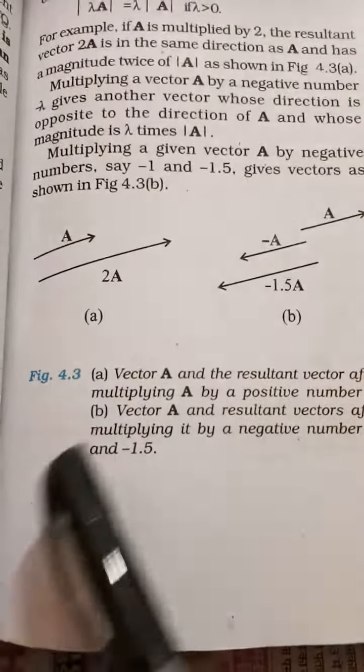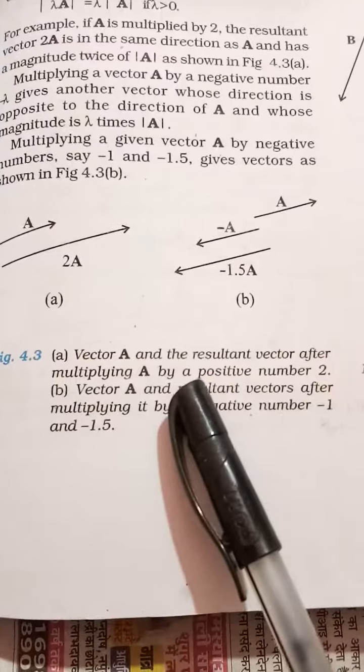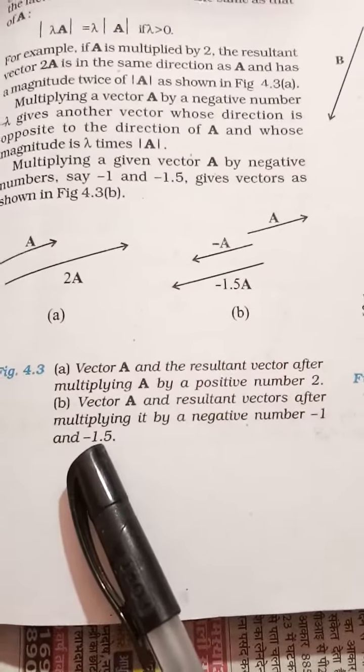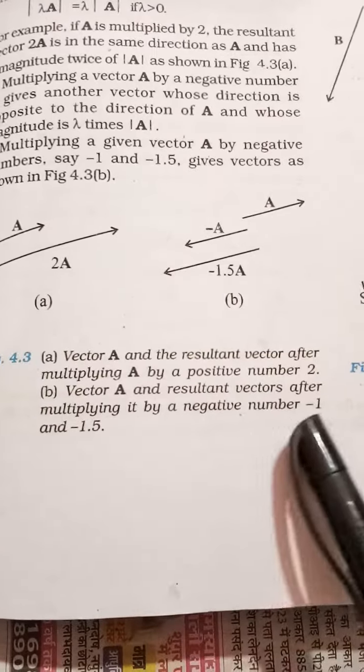Here you will see the directions: the vector A and the resultant vector after multiplying A by positive number 2, and vectors after multiplying it by negative numbers minus 1 and minus 1.5.